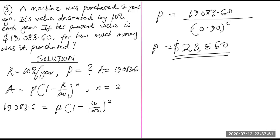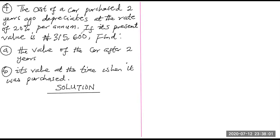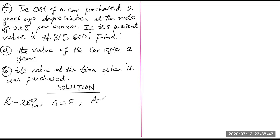Question four: the cost of a car purchased two years ago depreciates at 20% per annum. Its present value is ₦315,600. For part (a), find the value of the car after two years from now. The future amount A is unknown and P is the present value ₦315,600. n equals two years at the same constant rate of 20%.